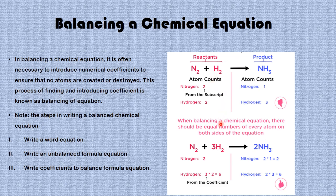In order to balance this equation, we look for the lowest common multiple between 2 and 1 for nitrogen, which is 2. If you multiply 2 by 1 it gives us 2, and if you multiply 2 by 1 it still gives us 2. Since the product side already indicates 1, there is no need to add anything there. But if you put a coefficient of 2 on the product side, you have 2 nitrogen on the product side and 2 nitrogen on the reactant side — which shows that nitrogen is already balanced.